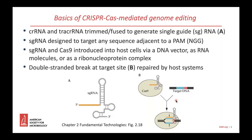How does the system function as a genome editing tool? It's facilitated by trimming and fusing the two RNA molecules — the CRISPR-RNA and the trans-activating RNA — to generate a single guide RNA. Vectors are available that contain much of the coding sequence for the single guide RNA, and researchers can insert a 20-nucleotide sequence that, following expression, targets the single guide RNA to a specific DNA sequence in the genome.